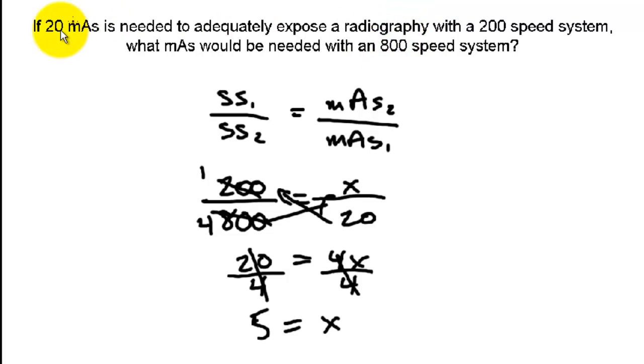Here you multiply. If you divide this one by 4, you should get your new mAs required to maintain density. And that's what it is here.